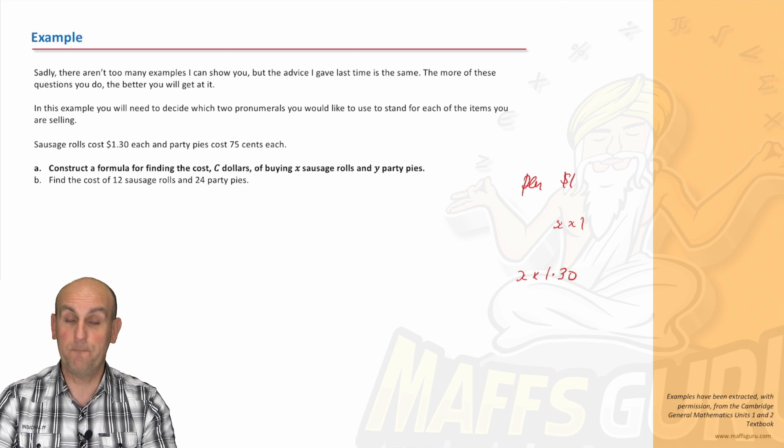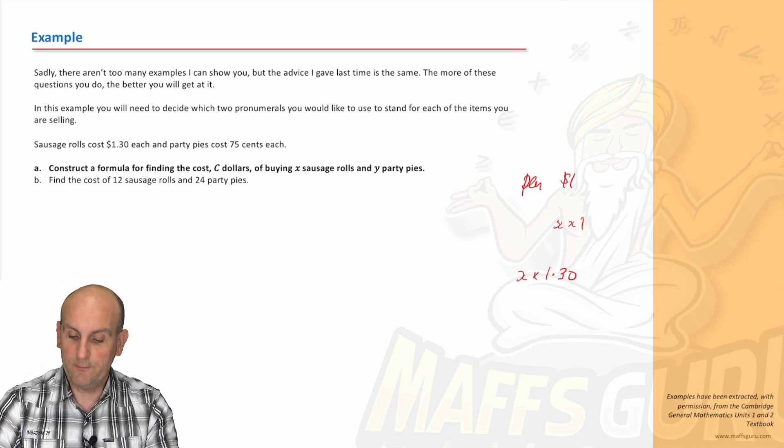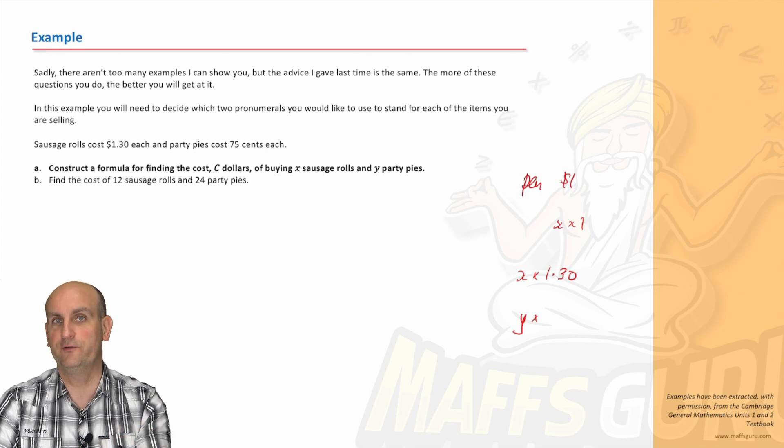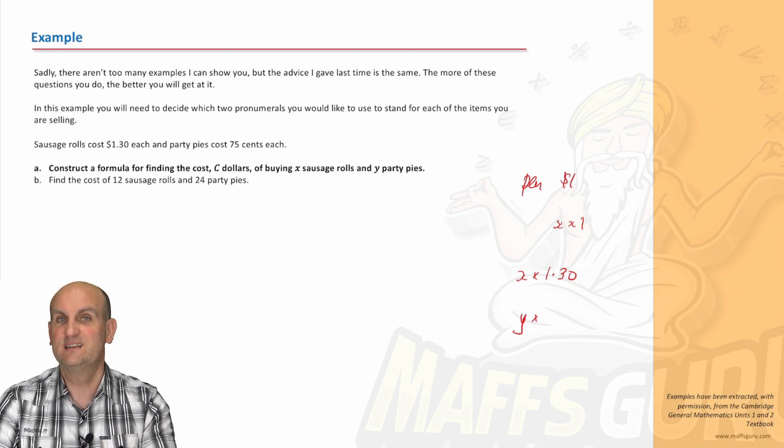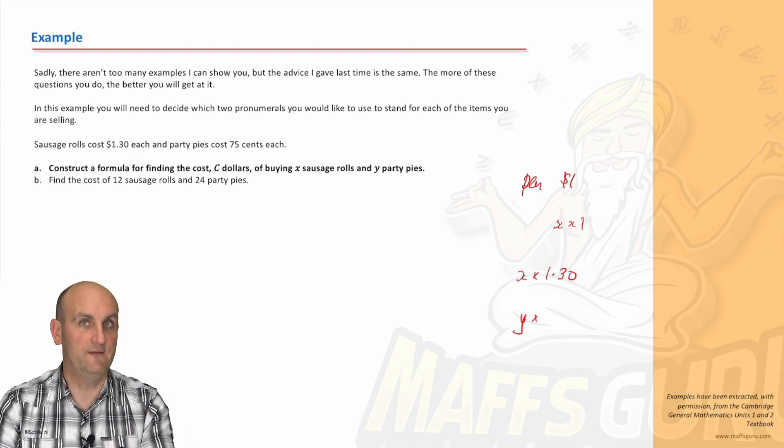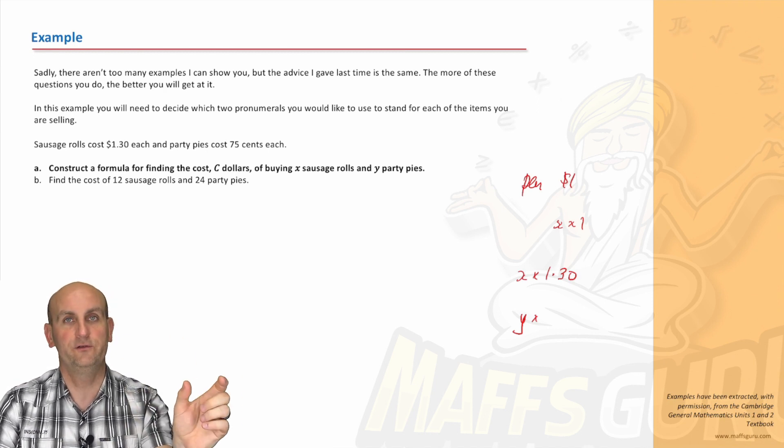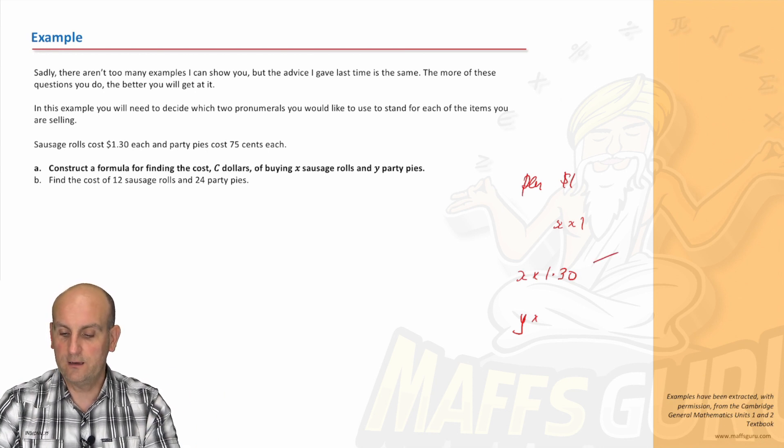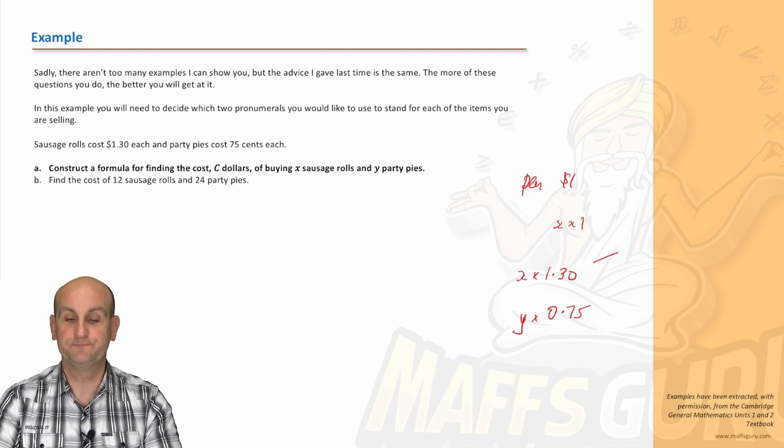Can you now see what I'm going to do for the party pies? Well, we know the number of party pies are Y. I'm going to times it by the cost of a party pie. Now, I'm not going to do 75. Because if I times it by 75, I'm going to get a very, very bad answer. Because one of those was in dollars and one of those was in cents. And because I've used dollars here, I'm going to convert that 75 cents to 0.75.